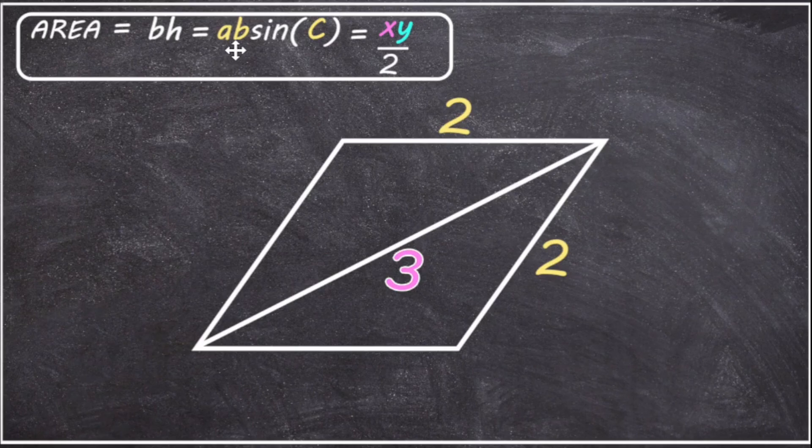If we try to use AB sine of C, because we're given the length of two adjacent edges, those edges could be A and B, but we need the angle between them in order to use sine of C, and we have no angle in the parallelogram, so we wouldn't be able to use the formula directly.